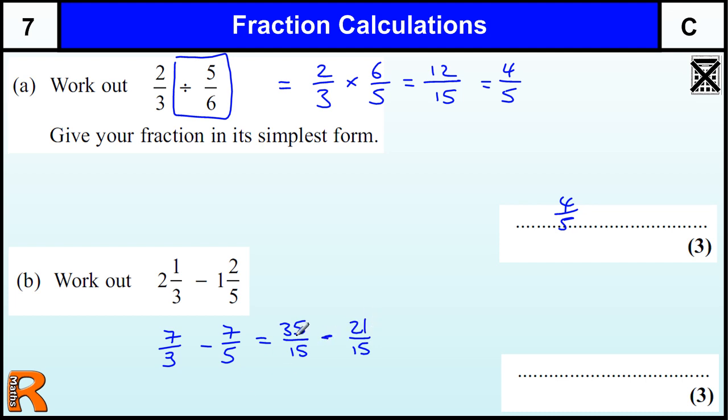And then we're subtracting those two. So we've got 35 take away 21. So we've got 35 minus 21 over 15. 35 take away 21 is just 14 over 15. And there's your answer, 14 fifteenths. It's worth three marks.